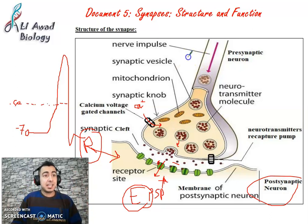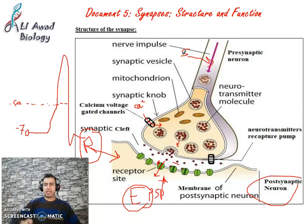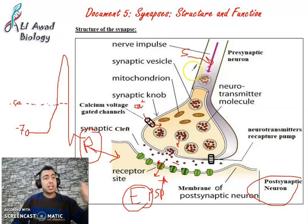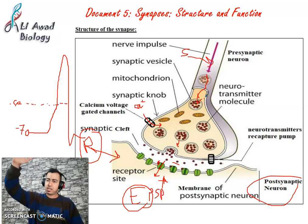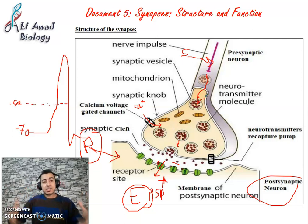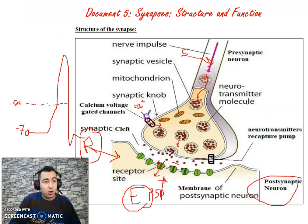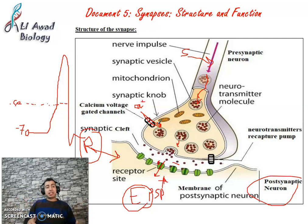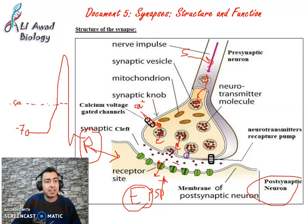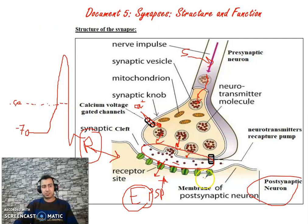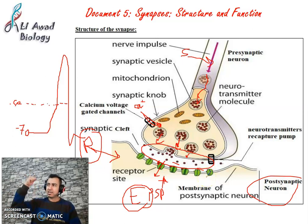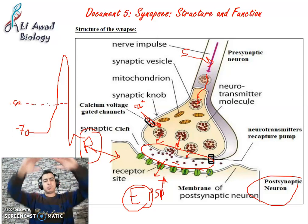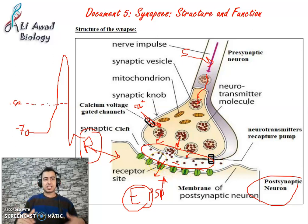If I apply more and more stimulation to a nerve cell, the number of action potentials increases. As the frequency of action potentials increases, more Ca2+ channels open, more calcium enters from the extracellular to the intracellular medium, more vesicles are driven, and more neurotransmitters are released. The concentration of neurotransmitters in the synaptic cleft increases, and thus more neurotransmitters bind to receptors.